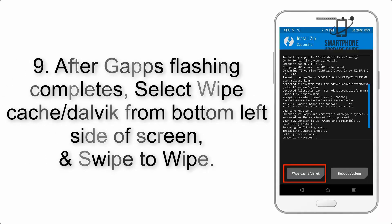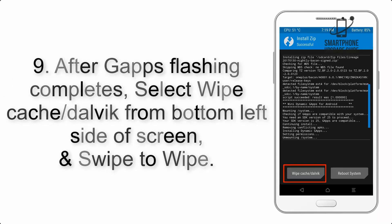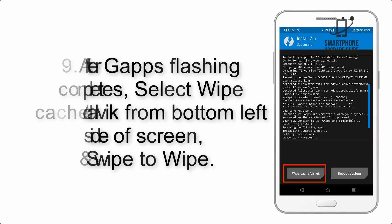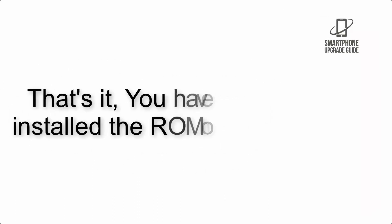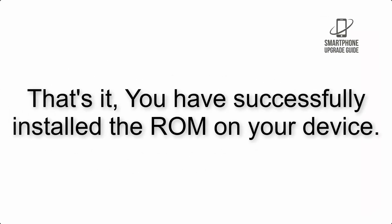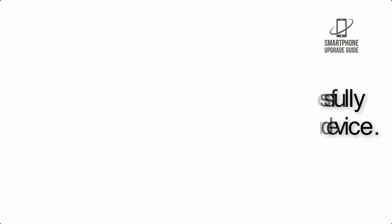Step 8: Flash the GApps zip package in the same manner. Step 9: After GApps flashing completes, select Wipe Cache and Dalvik from the bottom left side of the screen and swipe to wipe. Step 10: When the flashing process is complete, hit Reboot System. That's it — you have successfully installed the ROM on your device.